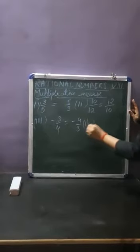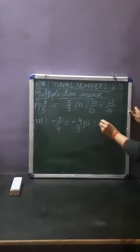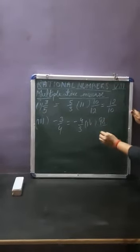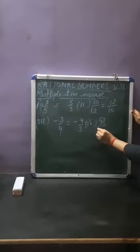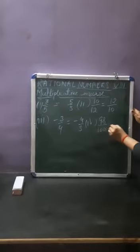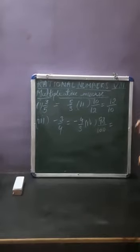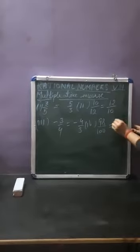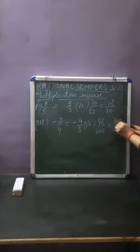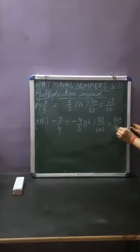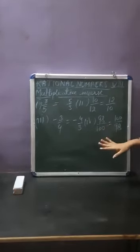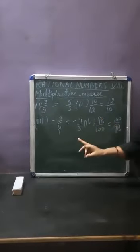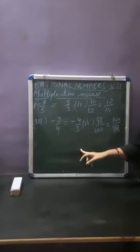Fourth part: if I am writing 98 upon 100, the multiplicative inverse of 98 upon 100 will be 100 upon 98. So this was the concept to get the multiplicative inverse of any rational number.